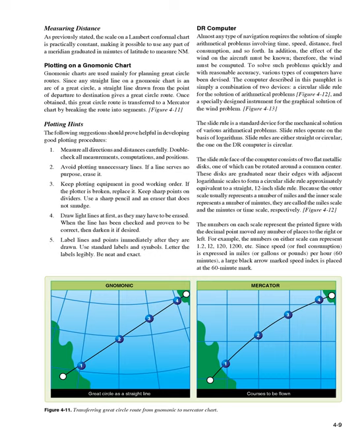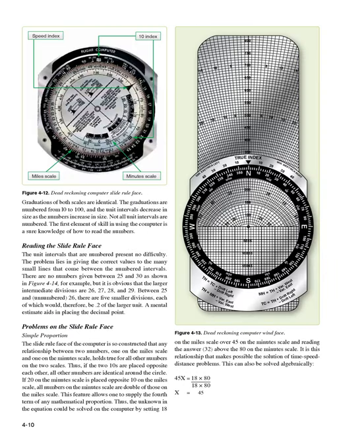Figure 4-12. The numbers on each scale represent the printed figure with the decimal point moved any number of places to the right or left. For example, the numbers on either scale can represent 1.2, 12, 120, 1200, etc. Since speed or fuel consumption is expressed in miles or gallons or pounds per hour — 60 minutes — a large black arrow marked speed index is placed at the 60-minute mark. Graduations of both scales are identical, numbered from 10 to 100, with unit intervals decreasing in size as numbers increase.